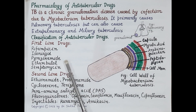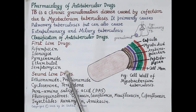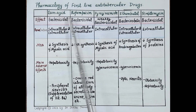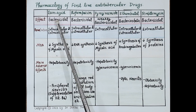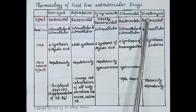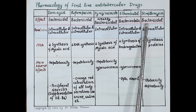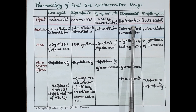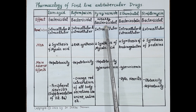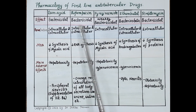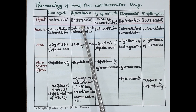Now let's discuss the pharmacology of first-line drugs. This chart summarizes the pharmacology of first-line anti-tubercular drugs: isoniazid, rifampicin, pyrazinamide, ethambutol, and streptomycin. All these drugs are bactericidal — they kill Mycobacterium tuberculosis — except ethambutol, which is bacteriostatic and inhibits growth. Pyrazinamide is weakly bactericidal compared to isoniazid and rifampicin, both of which are strongly bactericidal and are excellent anti-tubercular drugs.